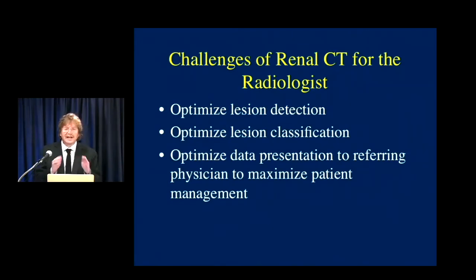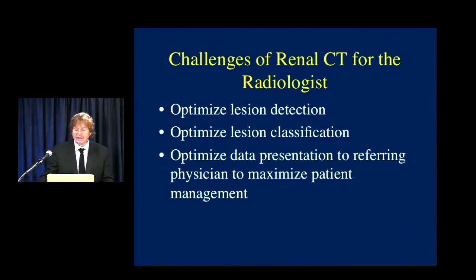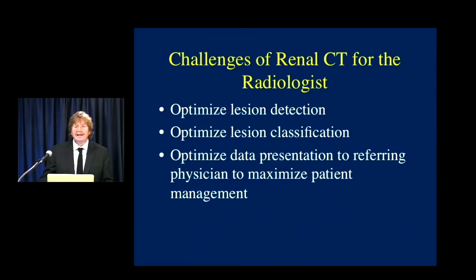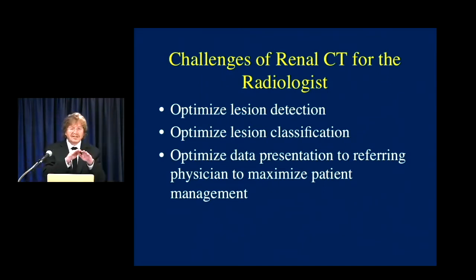One challenge is optimizing lesion detection. We've gotten much better at detection — almost every patient over age 50 has a small renal lesion. But we haven't done as well in lesion classification. We see many small lesions reported as 'too small to classify further.' What does that mean — are you worried about a cancer, or is it just a small cyst? Detection gets better with our new scanners, but classification hasn't quite kept up.